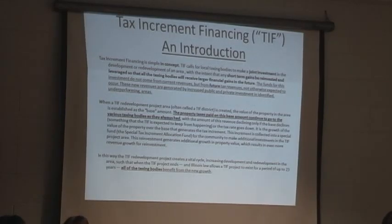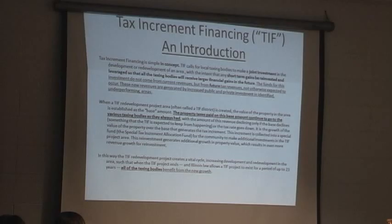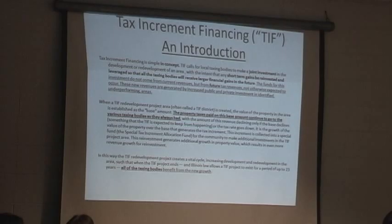Tax increment financing — I call this an introduction, but you see it's kind of detailed. It is complex, but at the same time it is fairly simple. The concept is simple, but it's a little bit complex to try to explain it all. Essentially, TIF is something that requires a joint investment of all local taxing bodies — all local taxing bodies being the village, the school districts, community college, county, park district, etc. — to essentially have a short-term investment with a long-term benefit of increased tax revenues in the future.